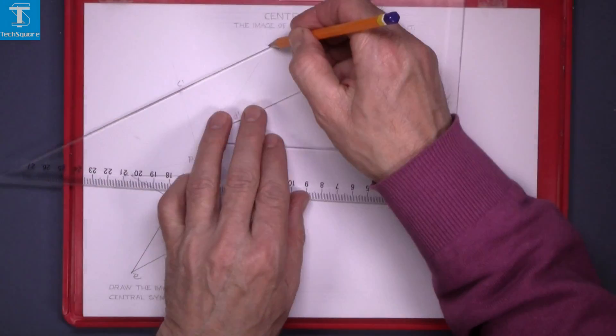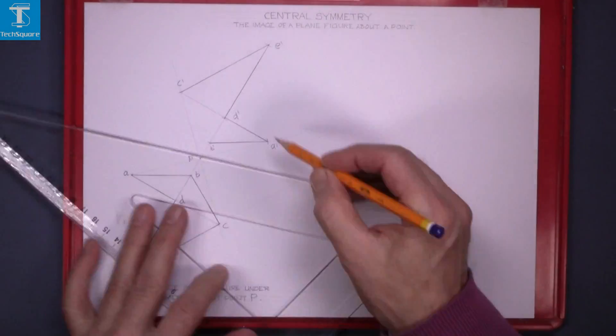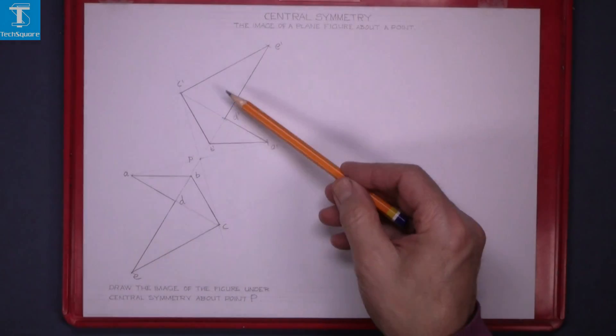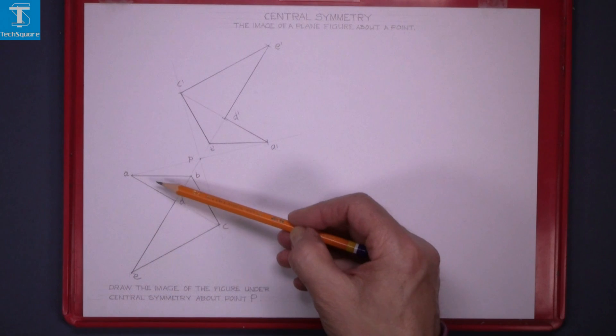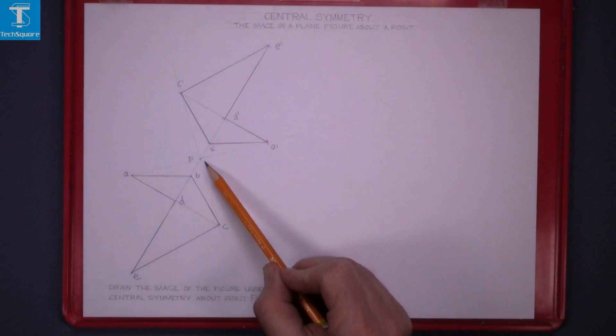Now just join up the points to get the image. And that's the image of this figure on the central symmetry about point P.